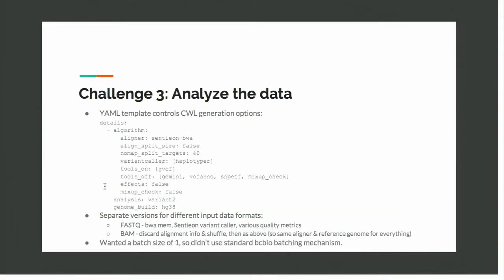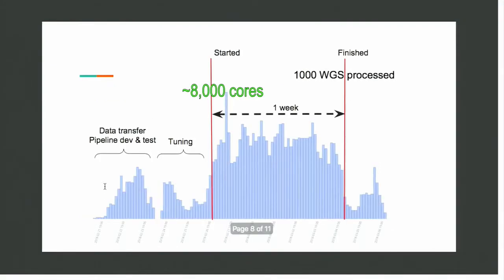For analyzing the data, we used bcbio next-gen, which is about as close as you can get to an off-the-shelf analysis workflow system. We configured that using GATK, BWA, and haplotype caller — all the things the customer wanted — and wrote a Common Workflow Language file which we could then run on Arvados at scale.